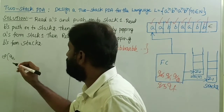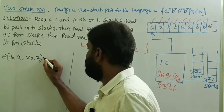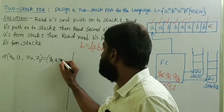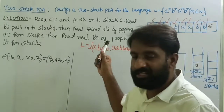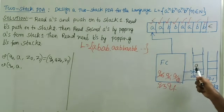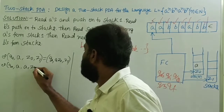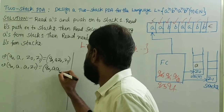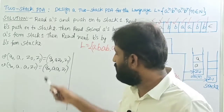Transition of q0: first input symbol is 'a', top of stack one is z0, top of stack two is z1 — add 'a' onto stack one without doing any operation on stack two. That is: δ(q0, a, z0, z1) = (q0, az0, z1). Then, for one more 'a': transition of q0 with input 'a', top of stack one is 'a', top of stack two is z1 — add 'a' onto stack one without doing any operation on stack two. That is: δ(q0, a, a, z1) = (q0, aa, z1). This 'a' is also pushed onto stack one. If there are more a's, repeat the same transition.